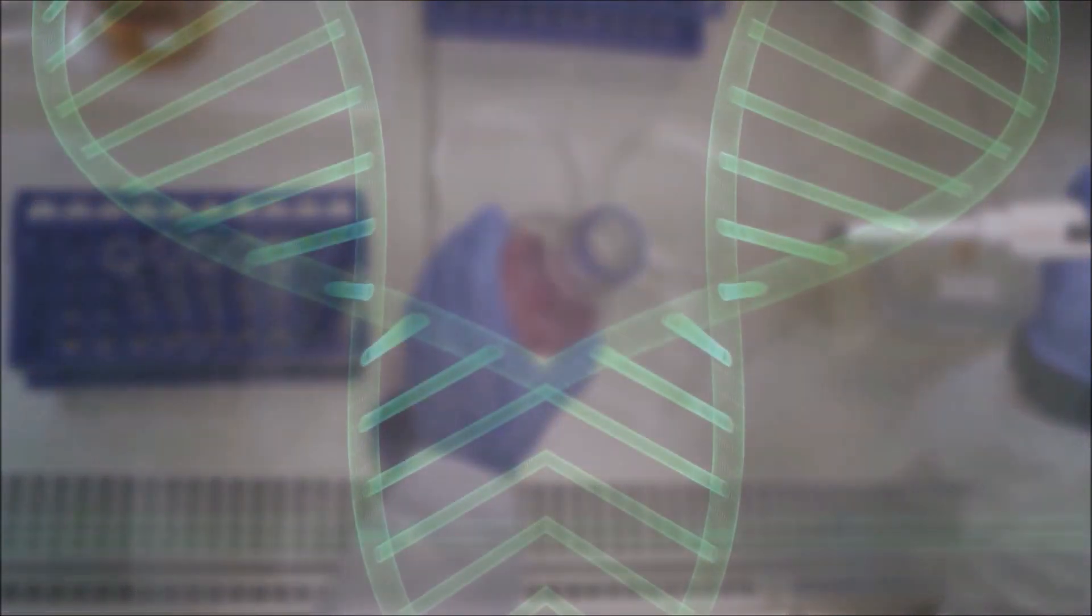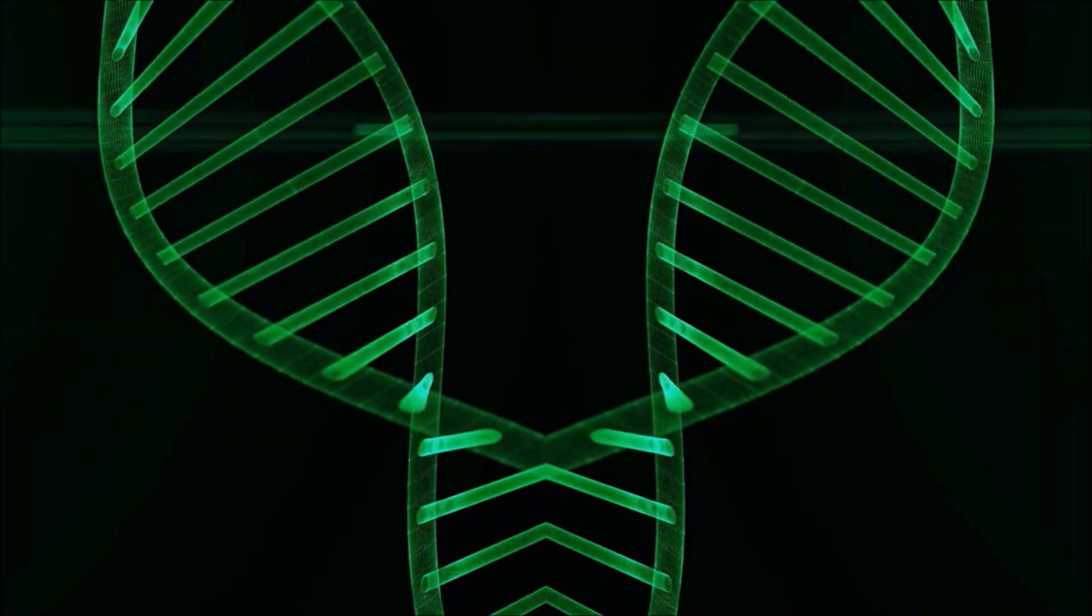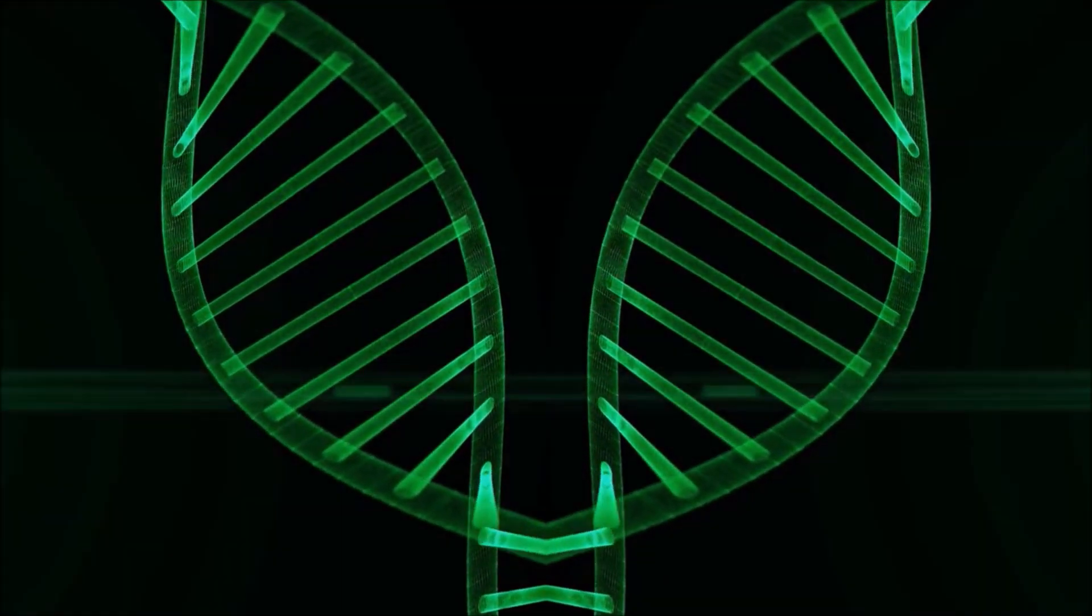Scientists have found that human chromosome 2 looks like two chimp chromosomes that fused together, which indicates that this may have been the way we changed from our primate cousins to the humans we are today.